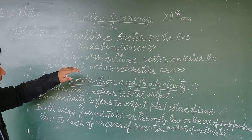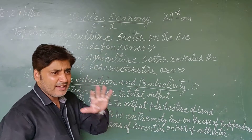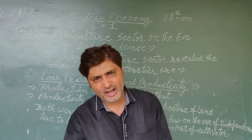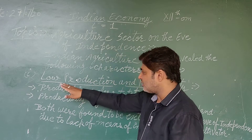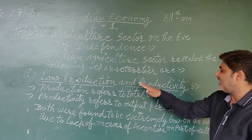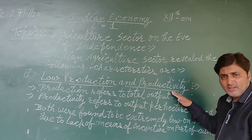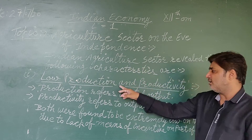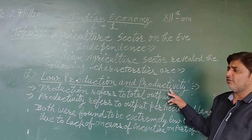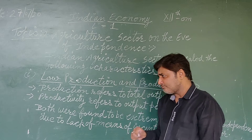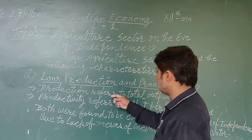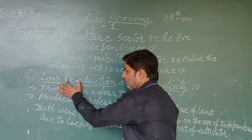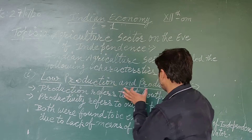This is why Indian agriculture is characterised by low production and low productivity. These are two distinct words: production and productivity. Both were low in the agriculture sector at the time, and it is important to understand the difference between these two terms.